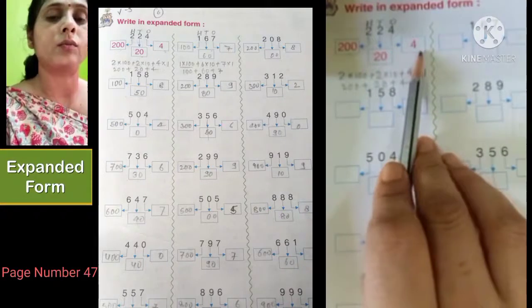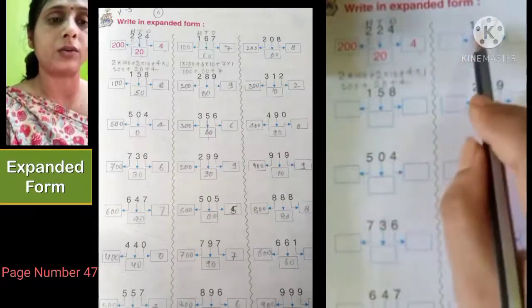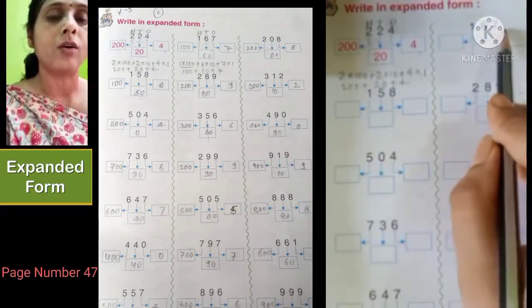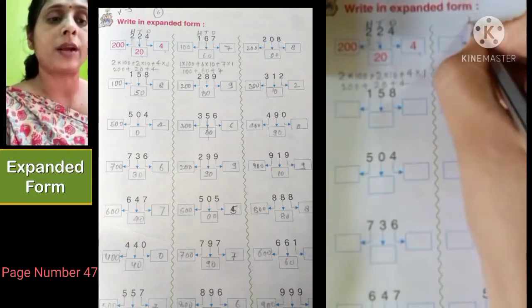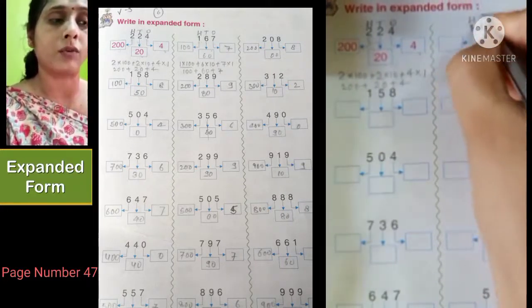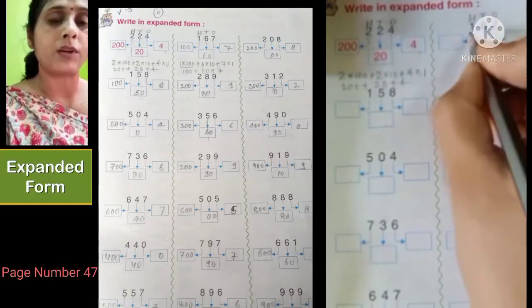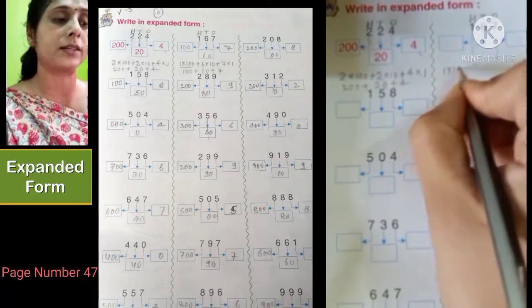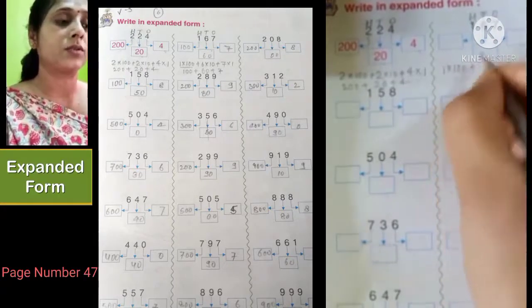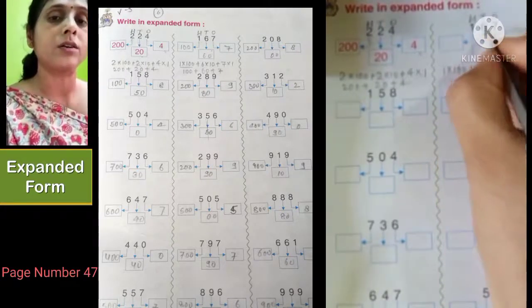Let us see another example. The next number is 167. This is also a three digit number. Let us see the position of these numbers: hundreds, tens, and ones. At the place of 100, 1 is given, so we will multiply 1 with 100. At the place of tens, 6 is given, so we will multiply 6 with 10.